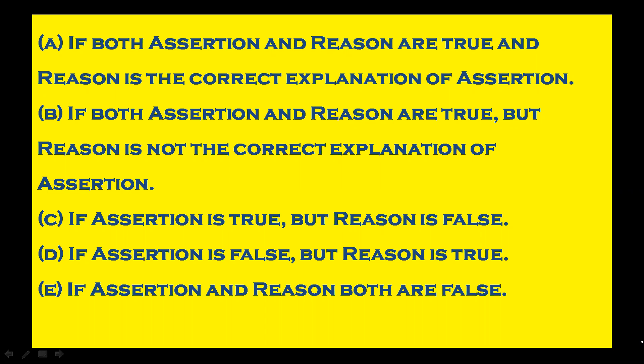The first option: if both assertion and reason are true, and reason is the correct explanation of assertion. The second option: if both assertion and reason are true, but reason is not the correct explanation of assertion. The third option: if assertion is true, but reason is false. The fourth option: if assertion is false, but reason is true. The fifth option: if assertion and reason both are false.